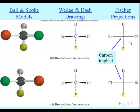When we draw these regular lines in a Fischer projection, what we have to appreciate is that horizontal lines represent atoms coming out towards us, the way wedges are. Vertical lines in a Fischer projection represent atoms receding away from us, and the carbon is at that intersection.